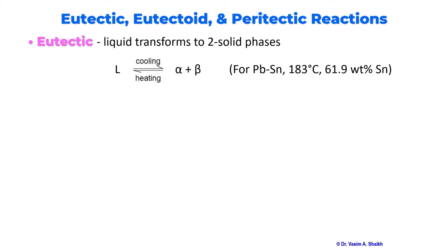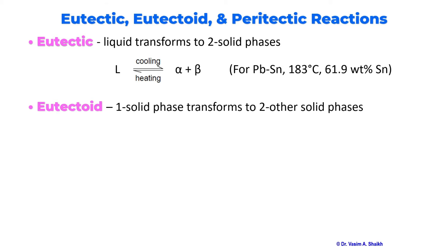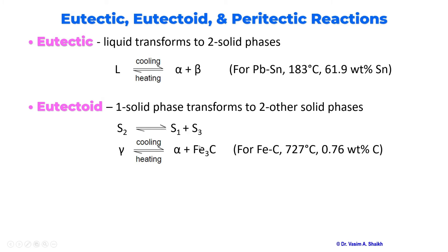But before that, we will look into all three reactions, then we will look into the phase diagrams. Next is eutectoid reaction — a very common example from the iron-carbon phase diagram — where one solid phase will transform into two solid phases. S2, a solid phase, will transform into S1 and S3. When cooling from S2, we get S1 and S3; when heating from S1 plus S3, we get one solid phase. In the iron-carbon phase diagram, at around 727 degrees Celsius and 0.76 weight percent carbon, we have this eutectoid reaction.